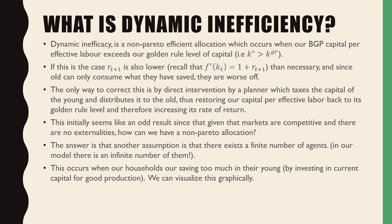If this is the case, RT+1 is also lower than necessary, and since the old can only consume what they have saved, they are worse off. The only way to correct this is by direct intervention by a planner, which taxes the capital of the young and distributes it to the old, restoring capital per effective labor back to the golden rule level and therefore increasing the rate of return. This initially seems like an odd result: given that markets are competitive and there are no externalities, how can we have a non-Pareto efficient allocation? The answer is that there exists a finite number of agents.